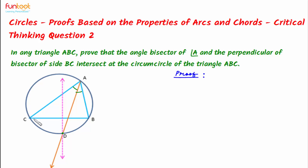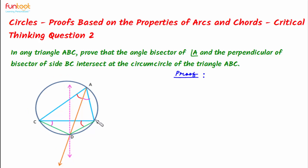Let us join sides CD and BD and consider triangle BDC. If we can prove that BDC is an isosceles triangle with BD equal to DC, then we can use the property that in an isosceles triangle, the perpendicular bisector of side BC will pass through the opposite vertex D — and this is what we want to prove.